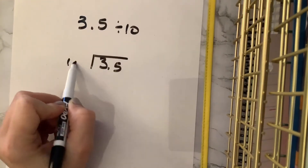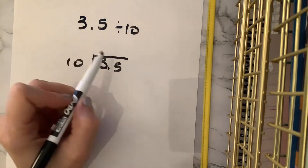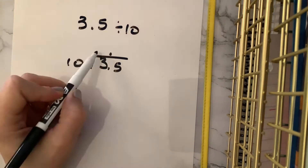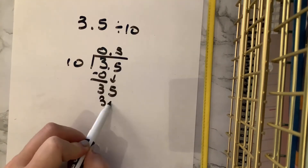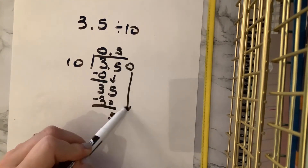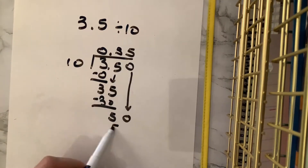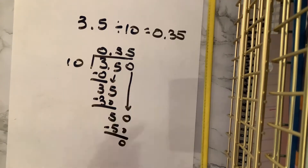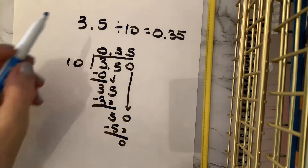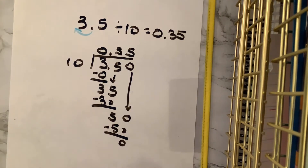So again, we're testing this theory. When we divide by 10, do we move the decimal point one space to the left? 10 does not go into 3, remainder of 3. 10 goes into 35 three times with a remainder of 5. We add our zero, bring it down. 10 goes into 50 five times with no remainder. So 3 and 5 tenths divided by 10 equals 35 hundredths. What happened with our decimal point? It went one space to the left. I think we've proven that that's true.